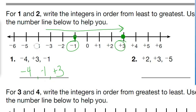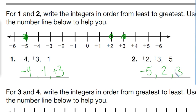So if we look at number 2 here, it says positive 2, positive 3, negative 5. Well, negative 5 would be way over here. Positive 2 would go right here. Positive 3 would go right here. So if we put those in order from least to greatest, negative 5 would be the least because it's the farthest to the left. The next integer would be positive 2, and then positive 3. You can put those plus signs if you want, or you can just leave them blank.